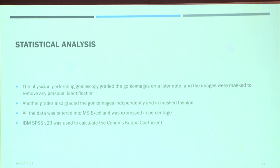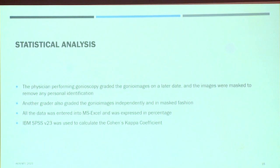The physician performing the gonioscopy graded the gonio images on a later date; it was completely masked and all identification was removed. Another grader also graded the images, so we could have two intra-observer and inter-observer assessments. The intra-observer agreement was 0.65. Both graders had no financial interest in the device, and IBM SPSS Version 23 was used to calculate the Cohen's kappa coefficient.